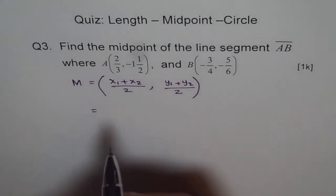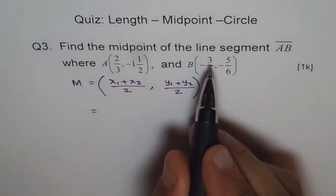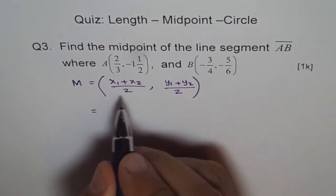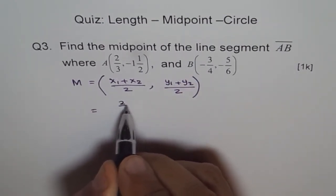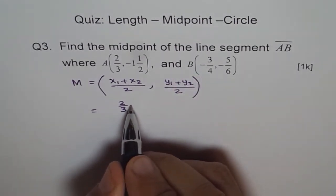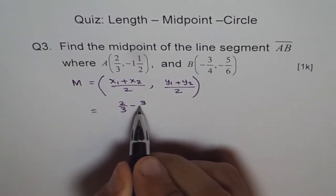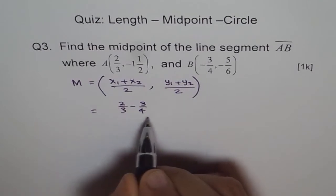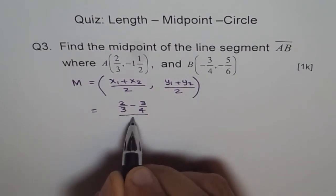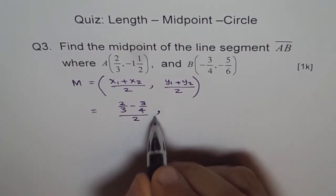Now here, it is 2/3 plus minus 3/4. So x points are 2/3 plus, and when we write plus and minus, it becomes minus, 3/4 divided by half. So I can write divided by half. Let me write like this for the time. This is your x points.